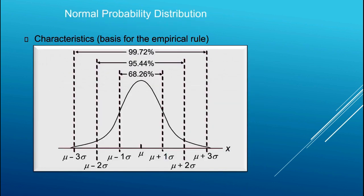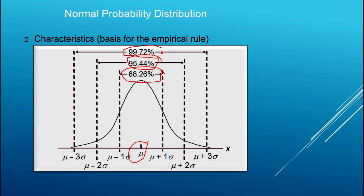The empirical rule applies to any bell-shaped symmetric distribution like the normal distribution. With the mean in the middle, 68.26% of observations lie within one standard deviation of the mean, 95.44% lie within two standard deviations of the mean, and virtually all observations lie within three standard deviations of the mean.